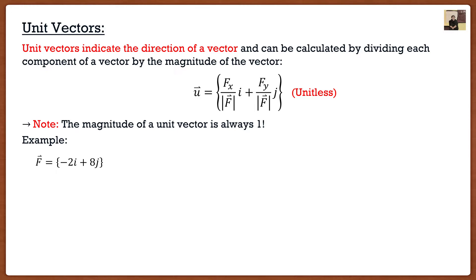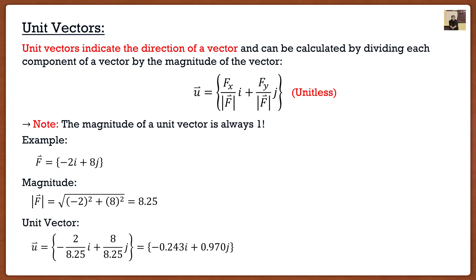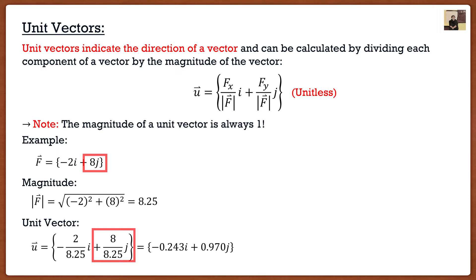Let's do an example. Say I'm given a force vector with components negative 2i plus 8j. The magnitude is simply the square root of negative 2 squared plus 8 squared, which gives approximately 8.25. Now with components negative 2 and 8, and magnitude 8.25, I can find the unit vector by dividing each component by the magnitude: negative 2 divided by 8.25 gives negative 0.243 in the i direction, and 8 divided by 8.25 gives 0.970 in the j direction. That's my unit vector.